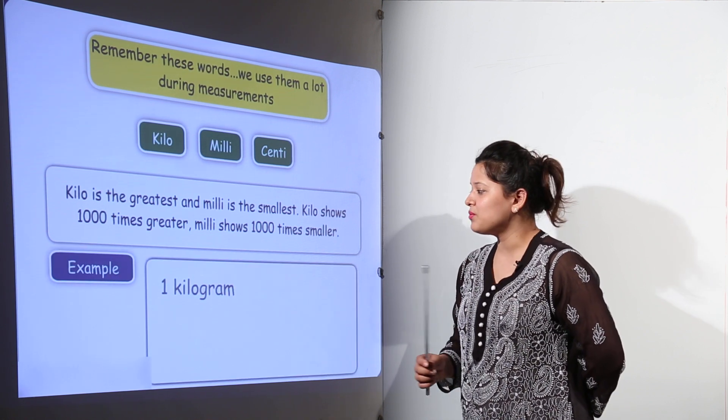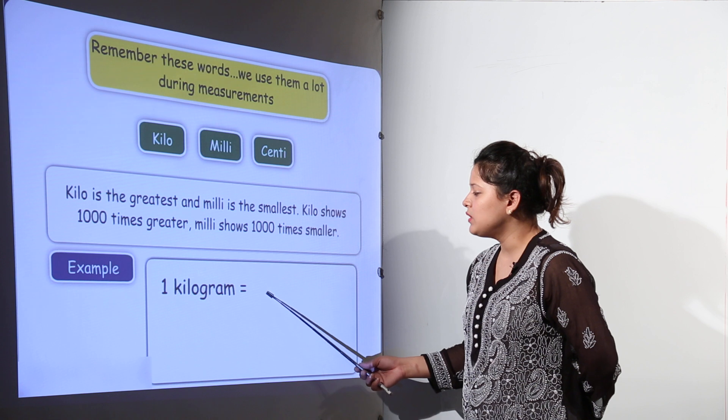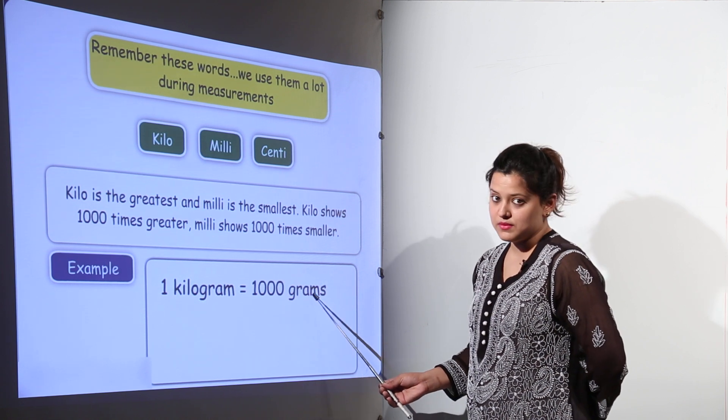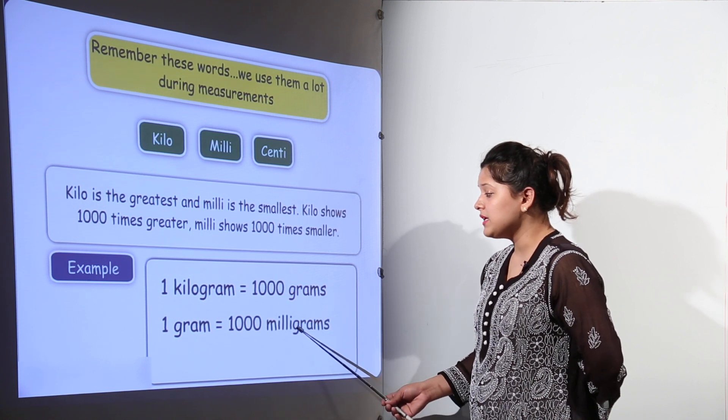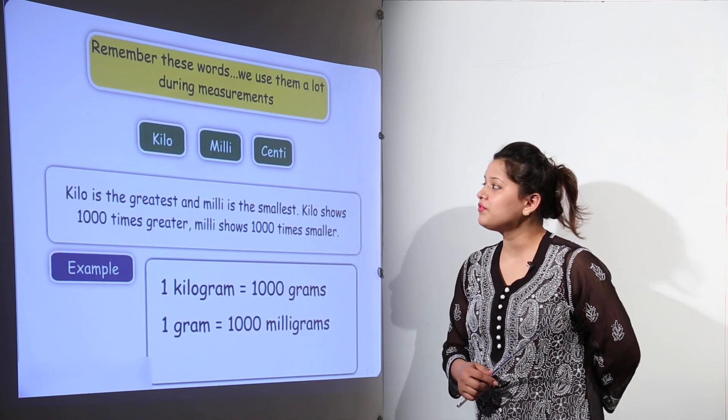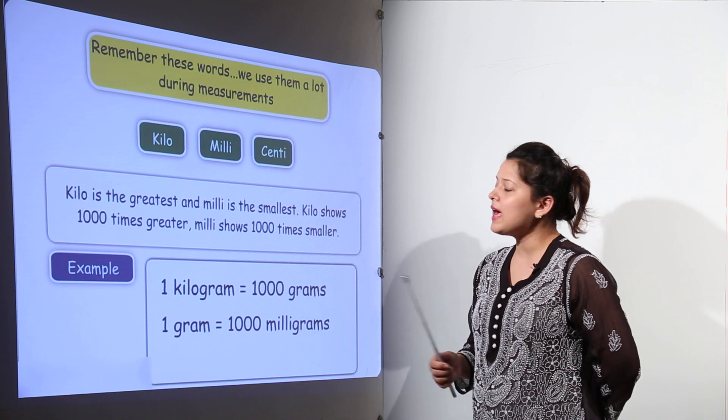For the example purpose if I show one kilogram would be equal to one thousand grams. Whereas one gram can be written equal to one thousand milligrams. So you see the difference between kilos, milli and centi.